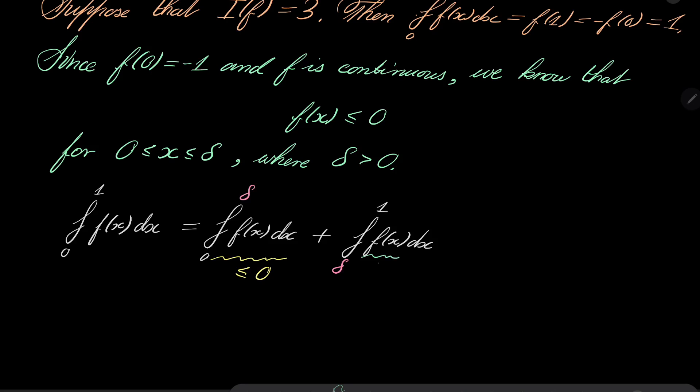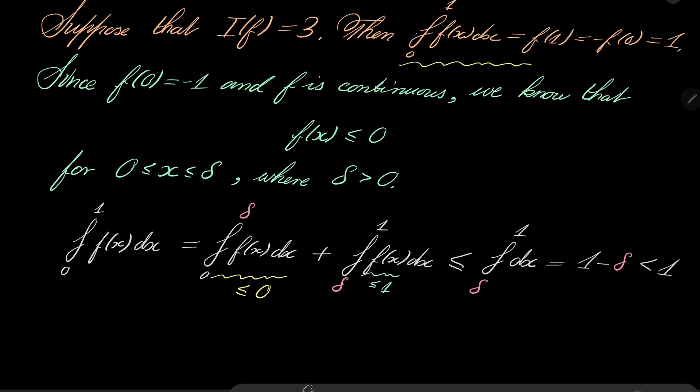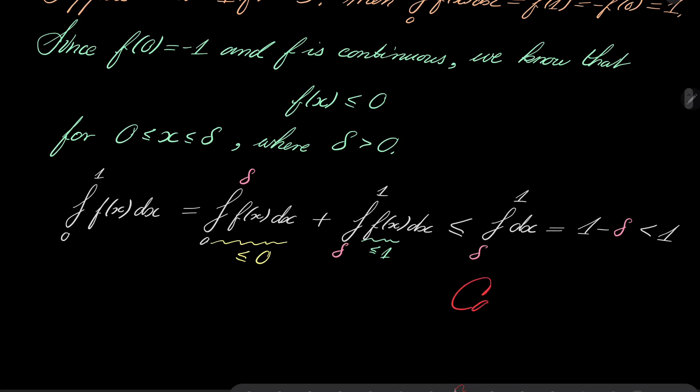And moreover, f(x) is less than or equal 1. So this can be safely bounded from above by integral from delta to 1 of just dx, which is 1 minus delta. But here comes the problem: 1 minus delta, delta is positive, it is less than 1. And we have noticed that this integral should equal 1, and now we know that it is less than 1. So we have a contradiction.